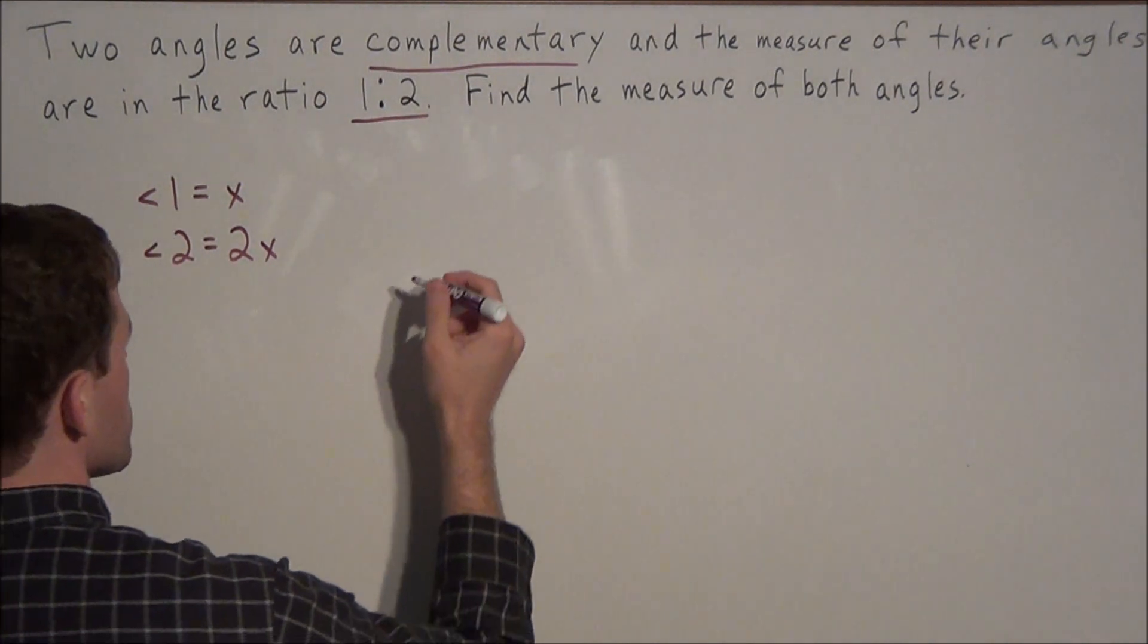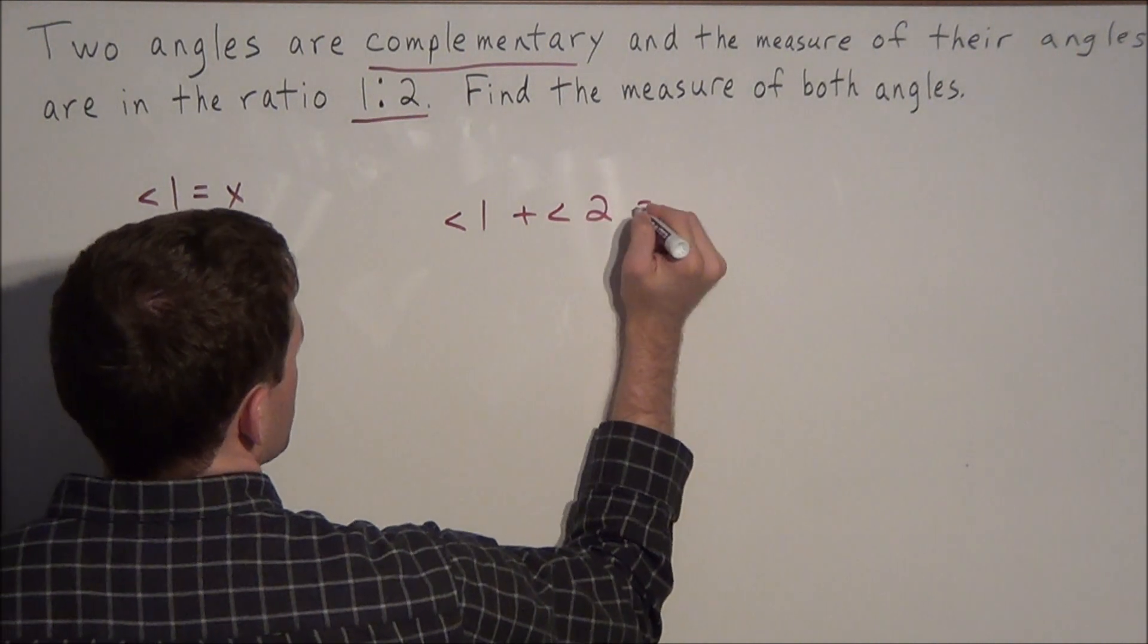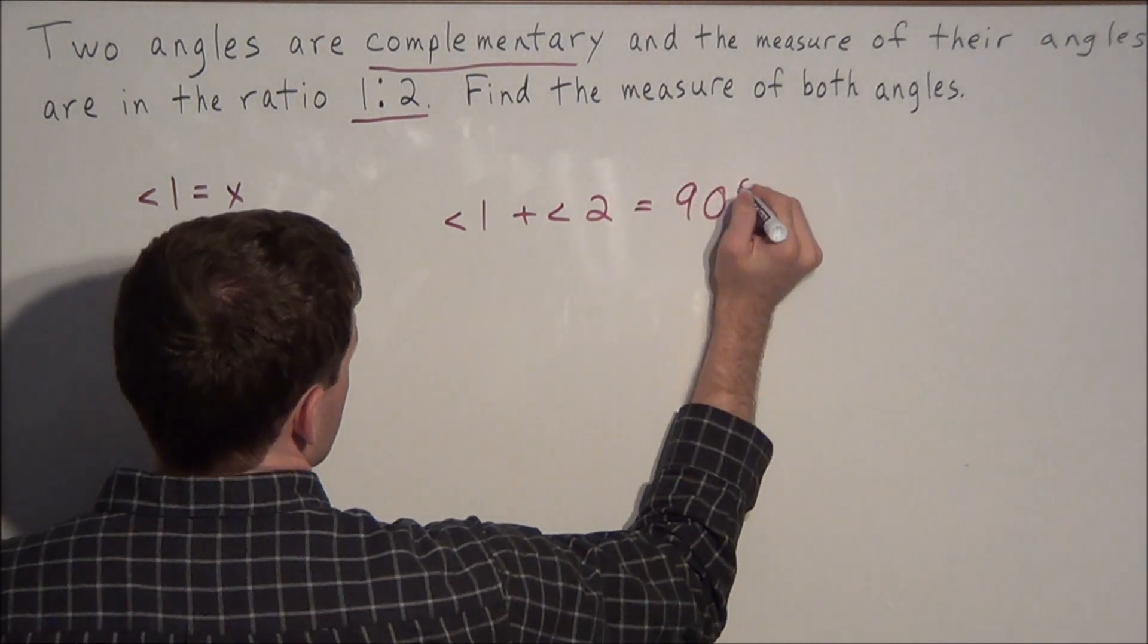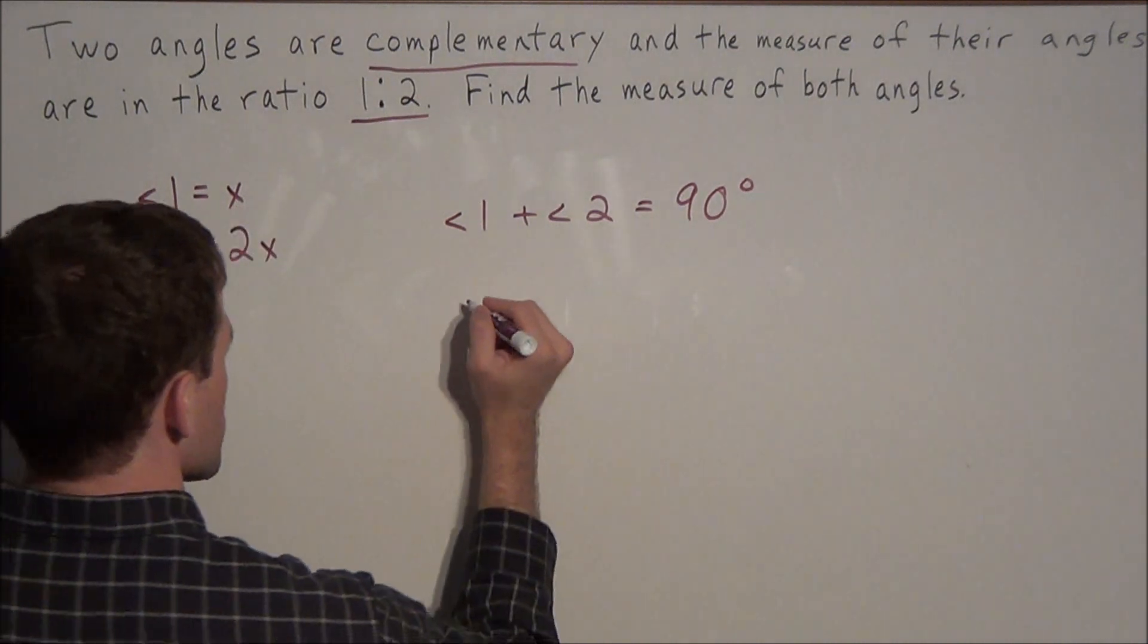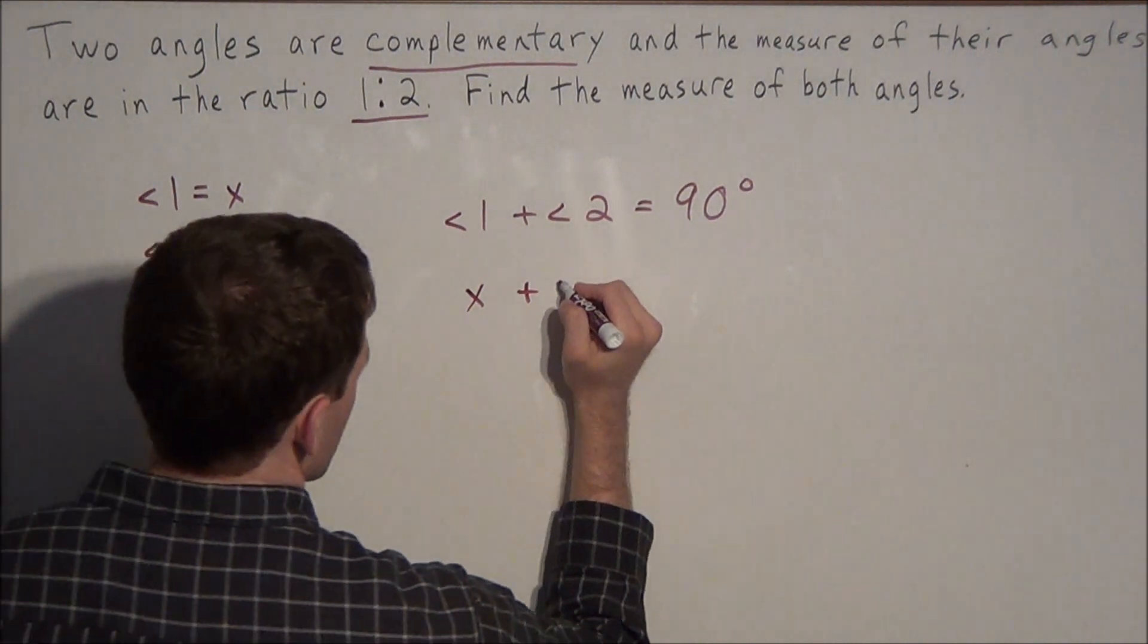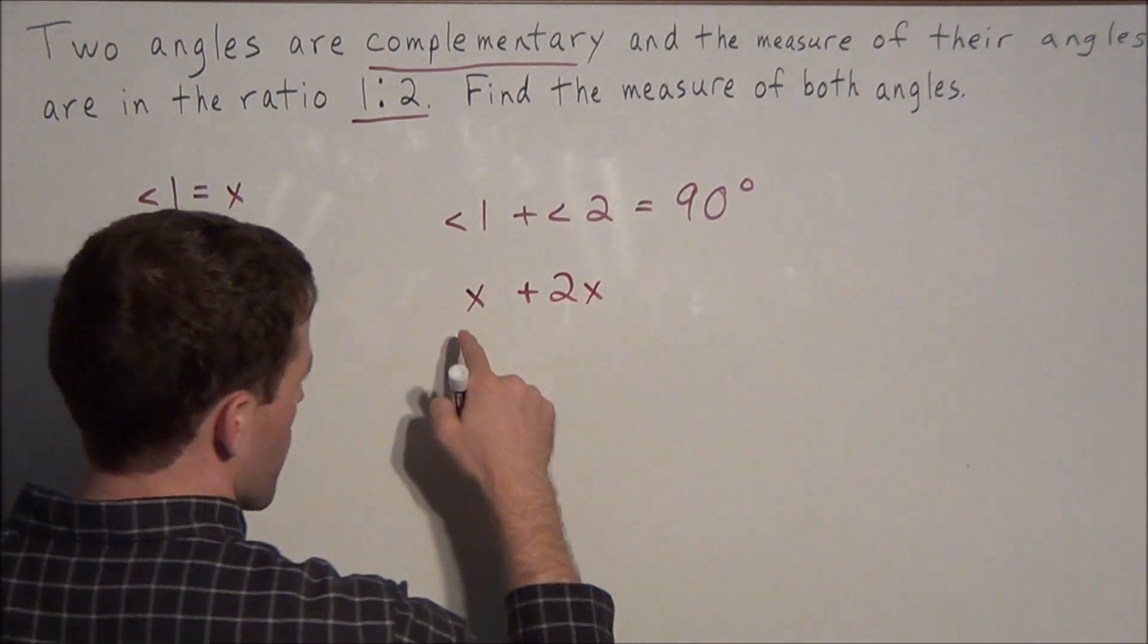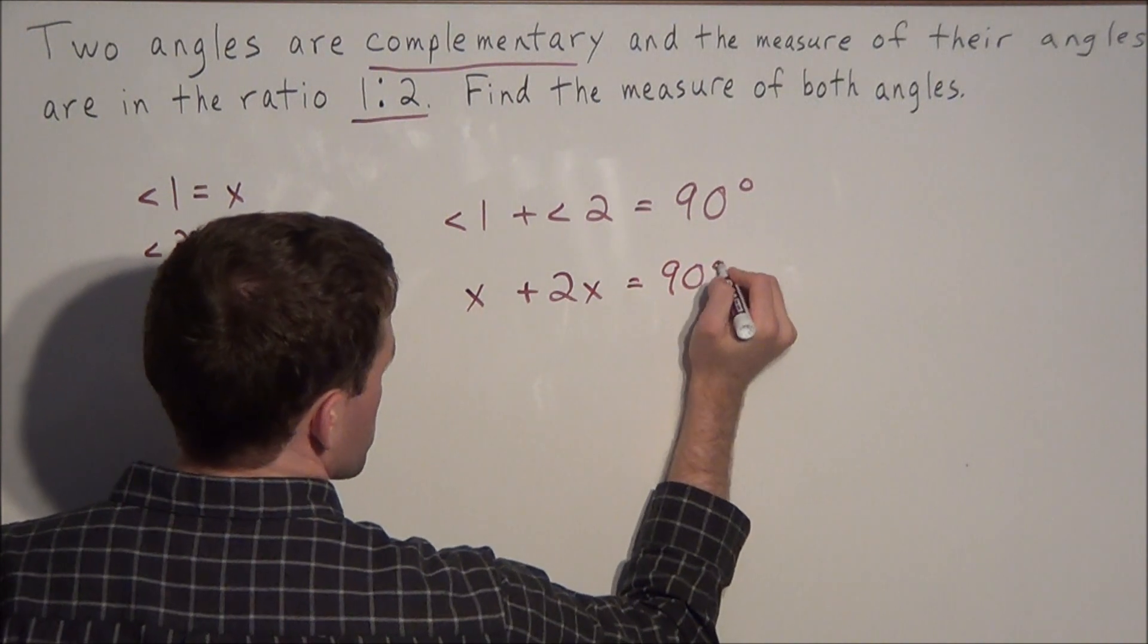So now what we could do is set up angle 1 plus angle 2 equals 90 degrees. But now we're going to make a substitution. We set angle 1 equal to x and angle 2 equal to 2x. So now we have x plus 2x equals 90 degrees.